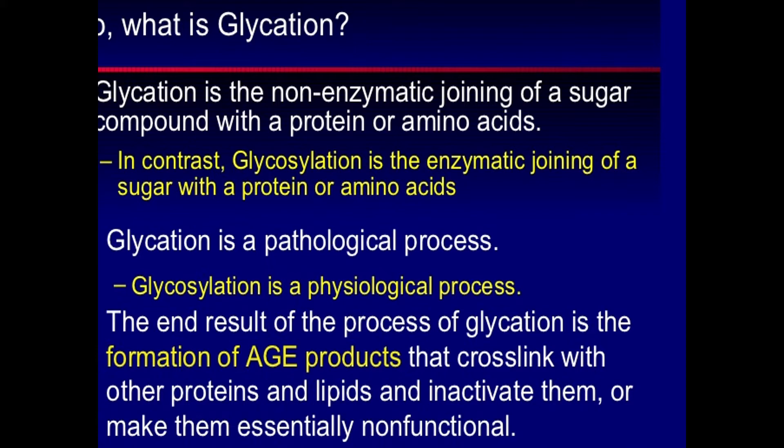We need glucose at all times — your brain cannot survive more than five minutes without glucose, as it is the only source of energy for the brain. But we need glucose within a limit. Once your glucose level is beyond that limit, that extra glucose — hyperglycemia — acts as a toxic substance and reacts with different things in multiple ways.